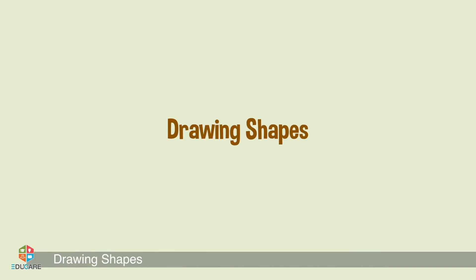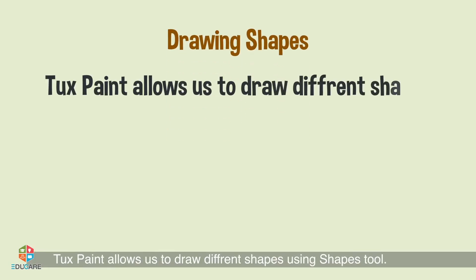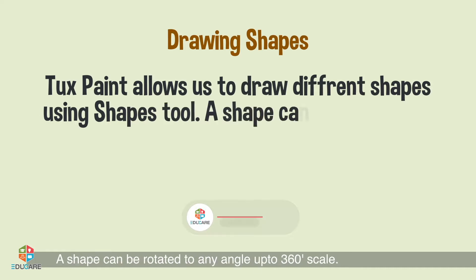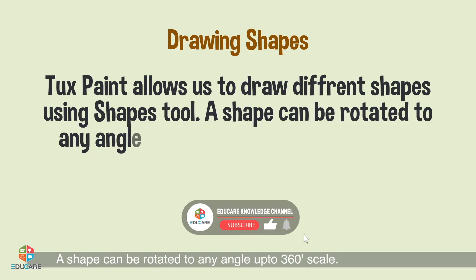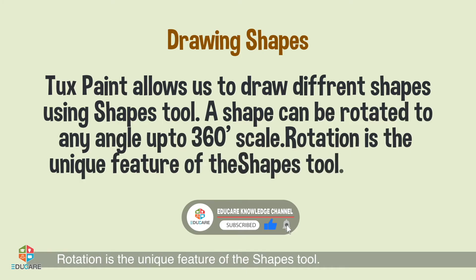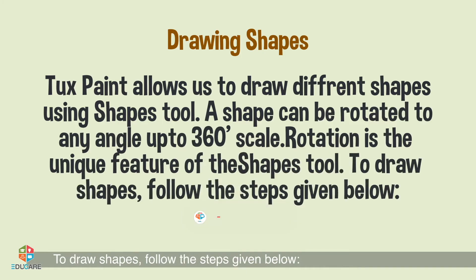Tux Paint allows us to draw different shapes using the Shapes tool. A shape can be rotated to any angle up to 360 degrees. Rotation is the unique feature of the Shapes tool. To draw shapes, follow the steps given below.